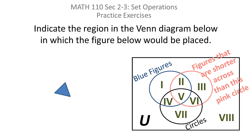Indicate the region in the Venn diagram below in which the figure below would be placed. You have a Venn diagram with three circles. The upper left circle consists of figures that are blue. The upper right circle consists of figures that are shorter across than the circle itself. The lower circle consists of things that are circles. They've labeled the regions, and we need to figure where within that universal set the blue figure would go.